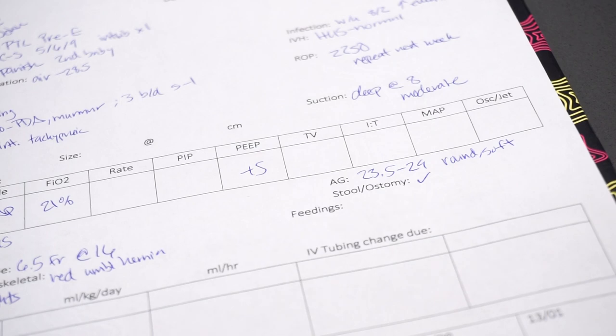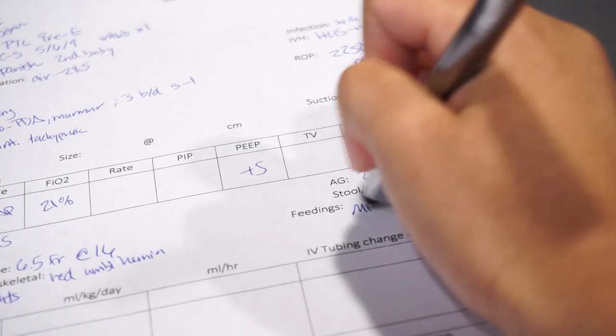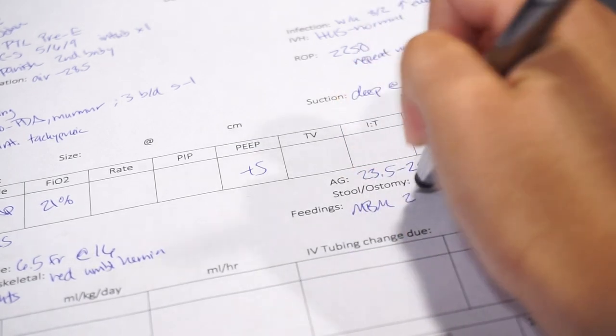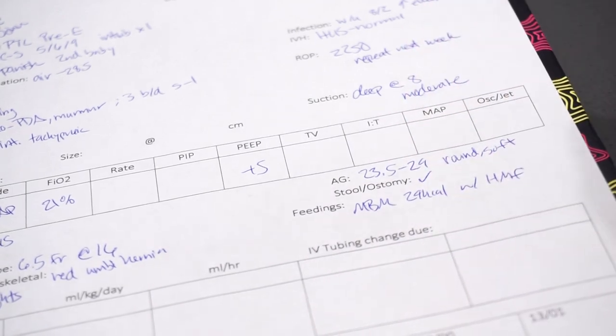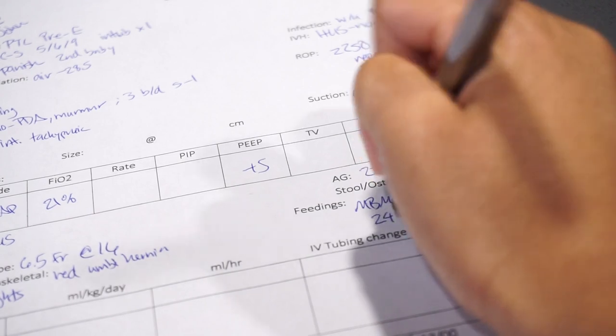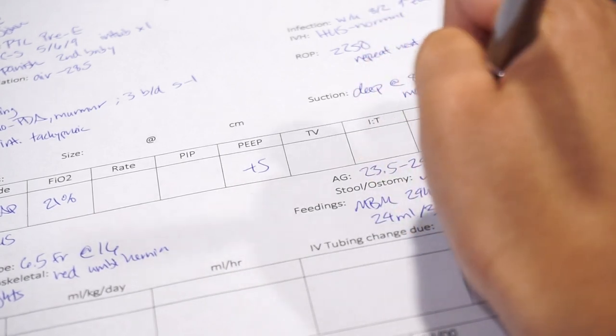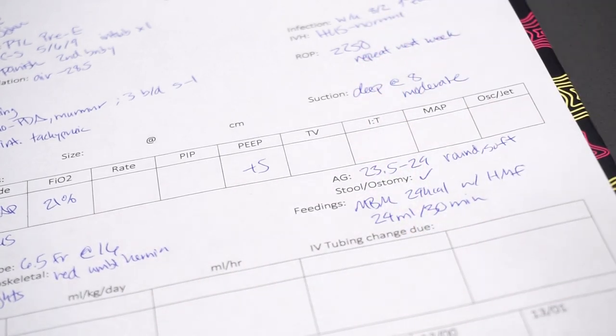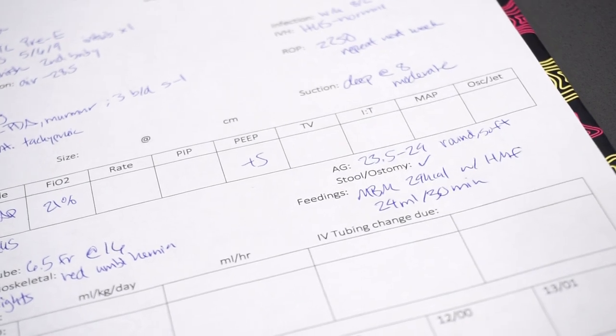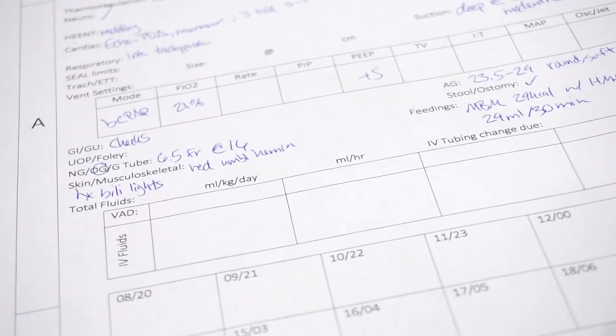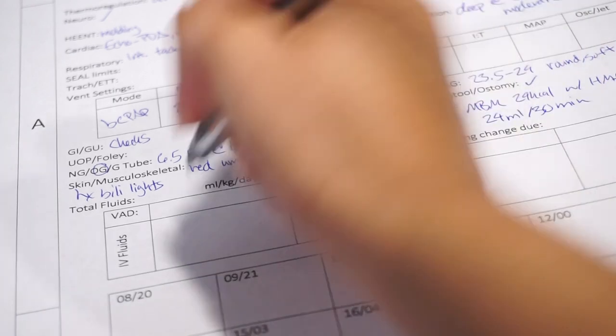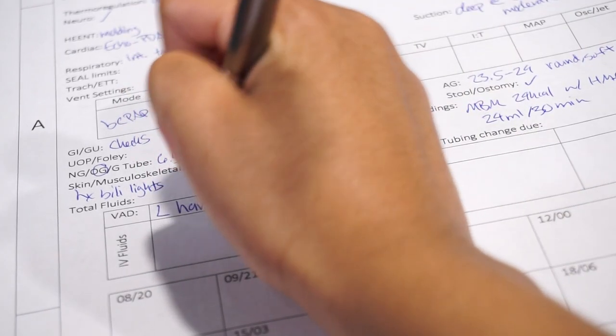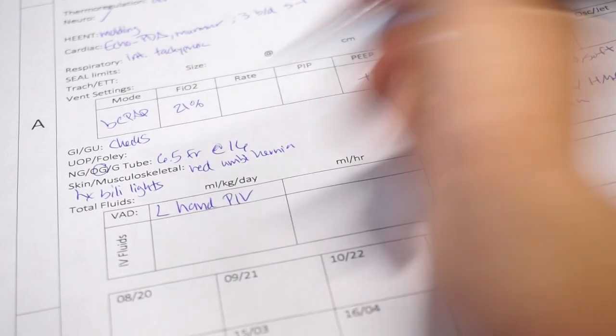As far as feeds, he's getting maternal breast milk, 24 cal, fortified with HMF. And so he's getting 24 mLs over 30 minutes. And he's tolerating that just fine. No issues with that. As far as access, he only has a left-hand PIV. And it is saline locked.